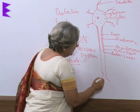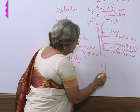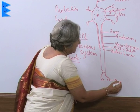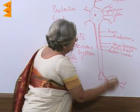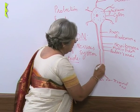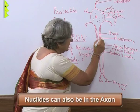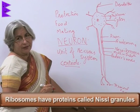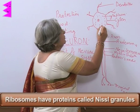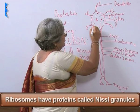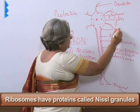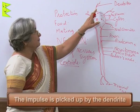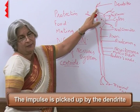Finally, it ends up in a gland or a muscle — this is the terminal end. There is a nucleoid even in the axon. Here there are ribosomes which have proteins called Nissl granules. So the impulse, or the stimuli, is picked up by the dendrite.